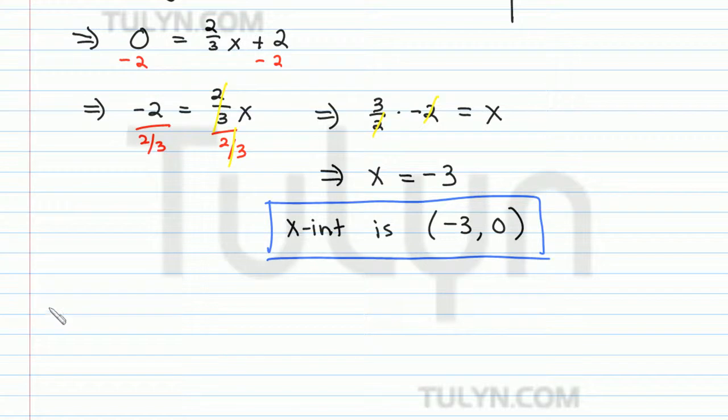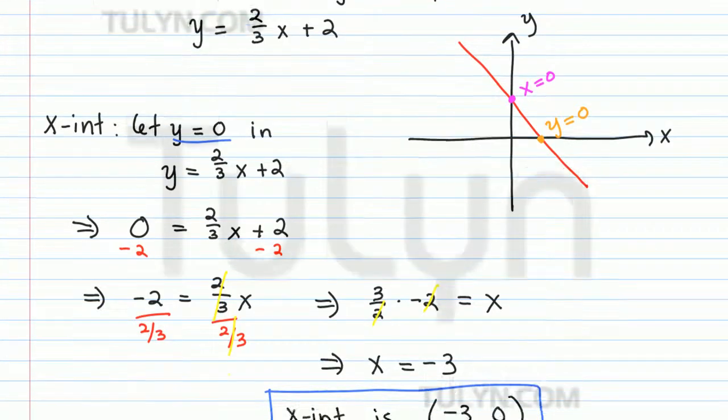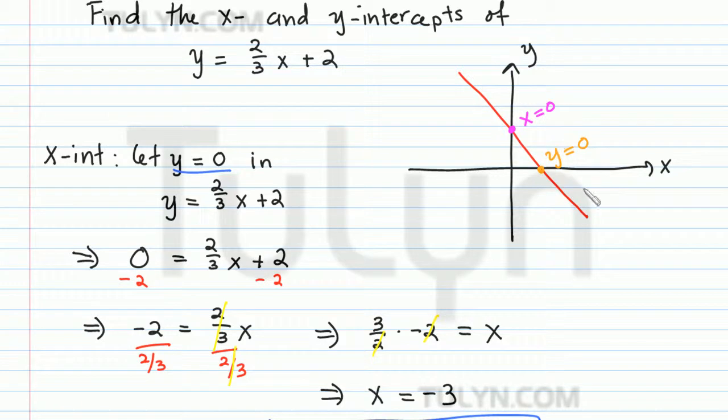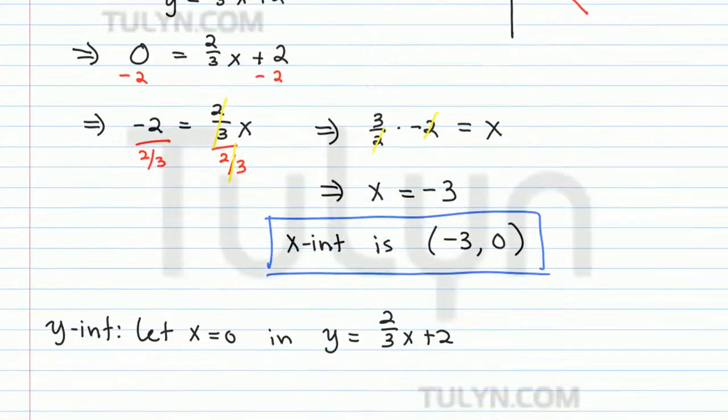So to find the y-intercept, this time we let x equal to zero in the formula y equals two-thirds x plus two. Because remember, our y-intercept is where the line crosses the y-axis, and at that point, x is equal to zero.